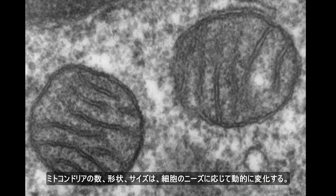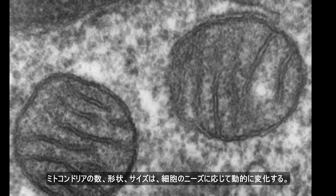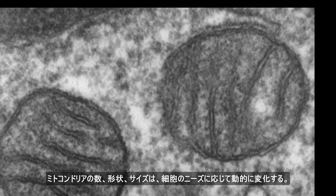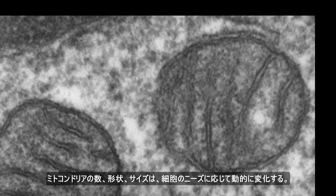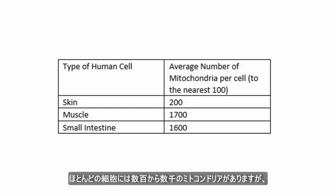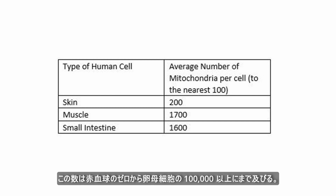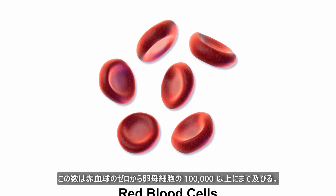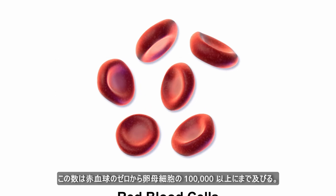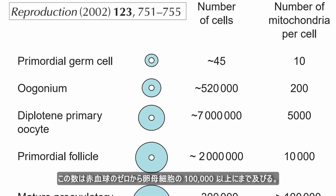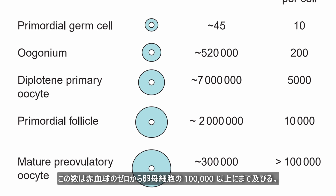The number, shape, and size of mitochondria can vary dynamically in response to the needs of the cell. Most cells have from a few hundred to a few thousand mitochondria.